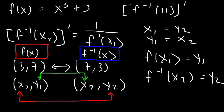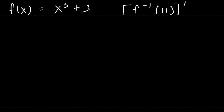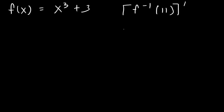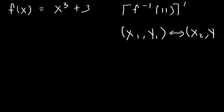We need to determine what this number represents — is it x1, x2, y1, or y2? The number inside the inverse function is x2. So to keep track of everything, I'm going to write x1, y1 and x2, y2. We know that x2 is 11, which means that y1 is also 11. So we need to determine x1 and y2.